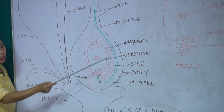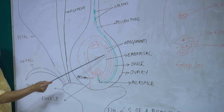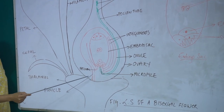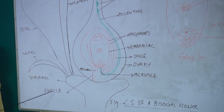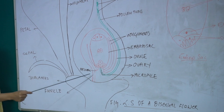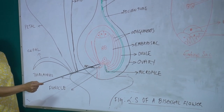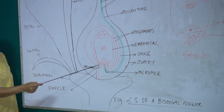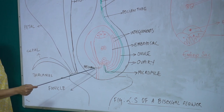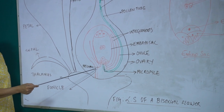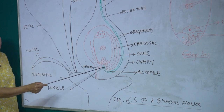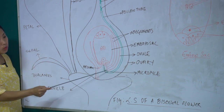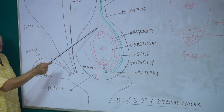The ovary, style, and stigma constitute the female reproductive structure. Within the ovary is the ovule, and this ovule encloses the embryo sac. The embryo sac in turn encloses eight cells which take part in sexual reproduction. The embryo sac is surrounded by one or two integuments, and the ovule is attached to the placenta by a structure known as the funicle.